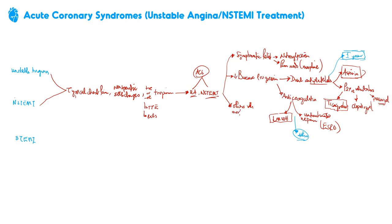Other medications with mortality benefit include beta blockers. Do you start beta blockers right away? Maybe not — remember some patients may be getting pre-discharge stress testing, and beta blockers can affect the results of a stress test. Make sure you're not starting a beta blocker the night before a stress test. Beta blockers should be started within the hospitalization, maybe within 24 hours — it doesn't really make a huge difference, but make sure you start before discharge.